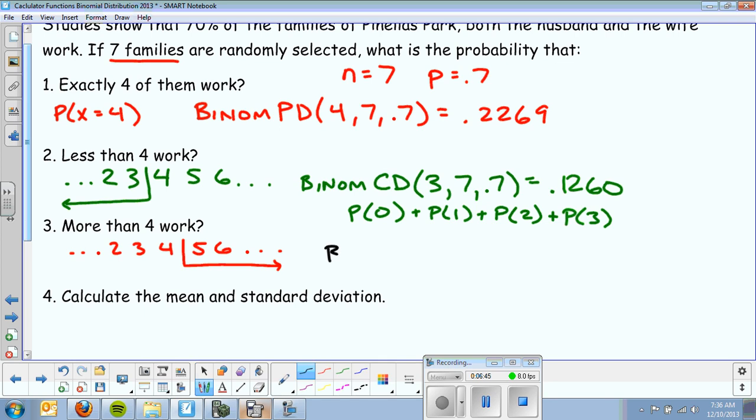If I type in binomial CD, cumulative density function, if I can get this area here, which is basically 4 or less. If I can type that in, but I want the area to the right, I'm just going to take 1 minus that.